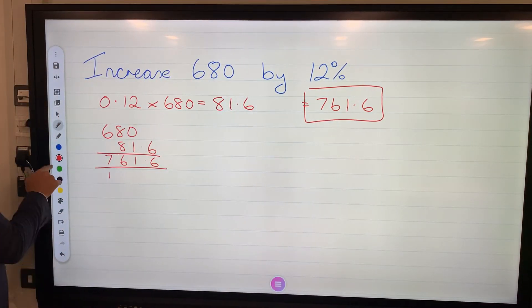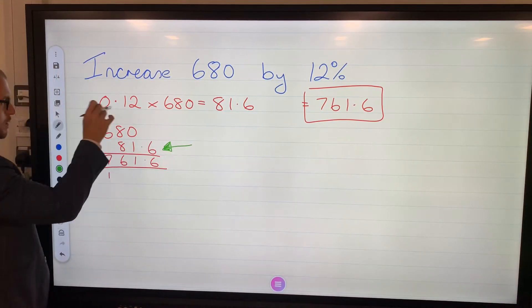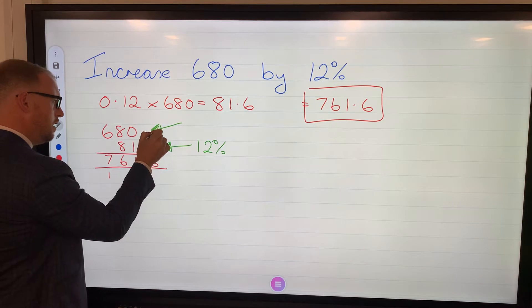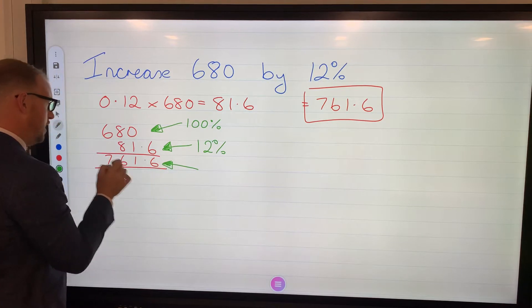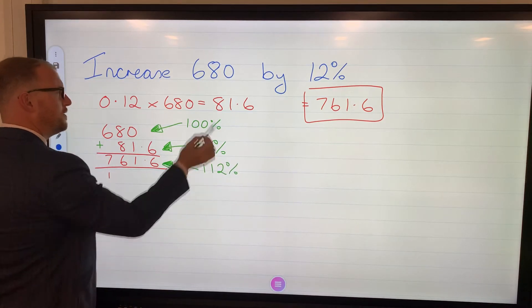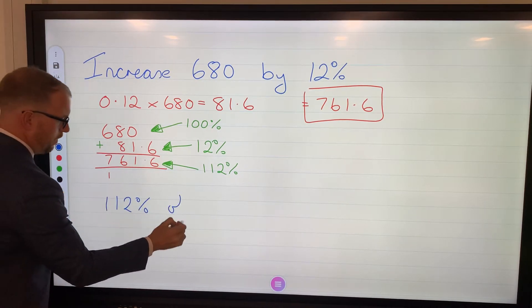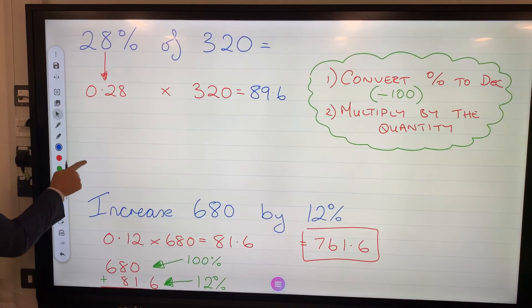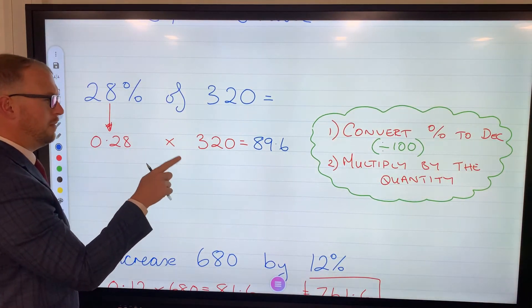However, let's think of a shortcut now. So this here, this 81.6, is 12 percent. This 680 technically, that's 100 percent. So this answer, if we've added these together, then that answer is 112 percent of 680. So what I'm saying is we're looking for 112 percent of 680. Now that looks like a similar question to that one there, where we had to convert the percentage to decimal then multiply it by the quantity.